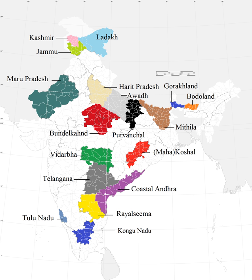Konkan is a rugged section of the western coastline of India, consisting of the coastal districts of Maharashtra, Goa, and Karnataka. The proposed Konkan state includes the districts of Ritnagira and Sindhaterg of Maharashtra, north and south districts of Goa, and Karwar up to Aganashini in Karnataka.